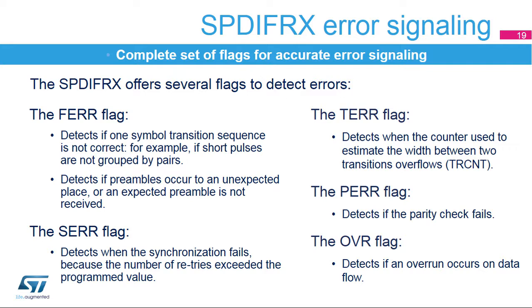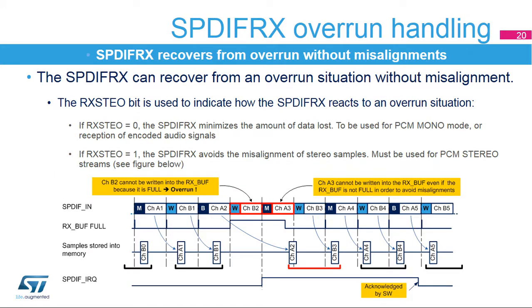A complete error signaling is provided to the application to define the root cause of any failures. The FERR flag detects errors linked to the frame structure. The SERR flag detects synchronization failures. The TERR flag detects when the counter used to estimate the width between two transitions overflows — this generally means no signal is detected on the selected SPDIF input. The PERR flag detects if the parity check fails. The OVR flag detects if an overrun occurs on the data flow.